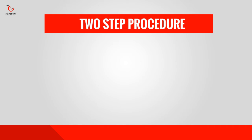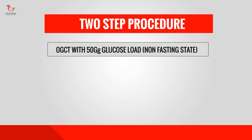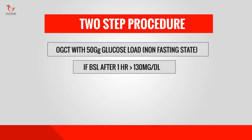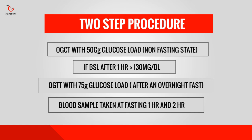The second approach is a two-step procedure. First, a challenge test is done — called the Oral Glucose Challenge Test. You do not have to fast for this test. 50 grams of glucose load is given to you, and your blood sample is taken after 1 hour. If your blood sugar level is more than or equal to 130 mg/dL, then you are prescribed the Oral Glucose Tolerance Test. You then do the OGTT after an overnight fast, and 3 samples are collected: fasting, 1 hour after giving glucose load, and at 2 hours.